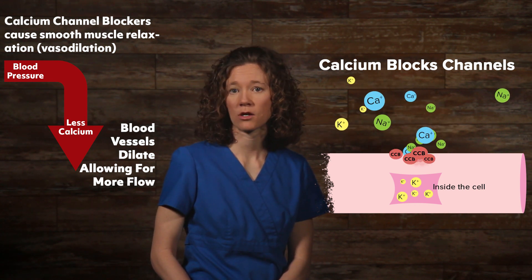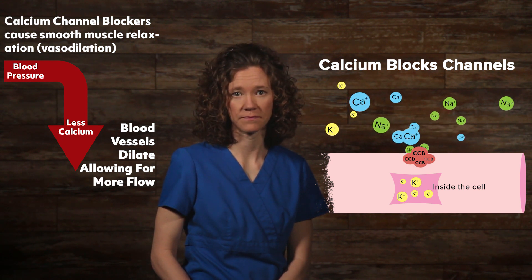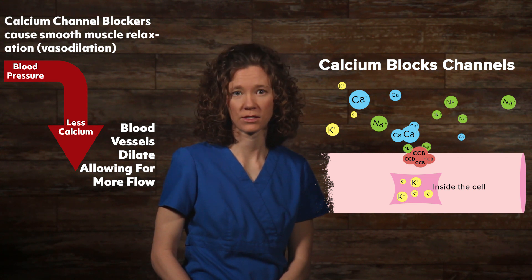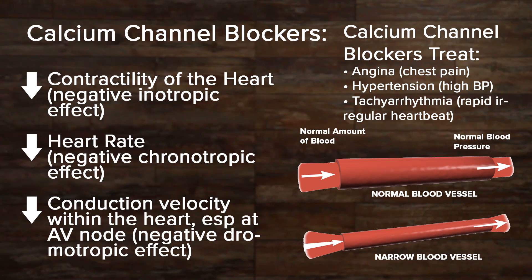Therefore, calcium channel blockers cause smooth muscle relaxation or vasodilation. They dilate coronary arteries and peripheral arterioles, but not veins. They decrease the contractility of the heart, also known as a negative inotropic effect. They decrease the heart rate, a negative chronotropic effect. They decrease the conduction velocity within the heart, especially at the AV or atrioventricular node, known as a negative dromotropic effect.